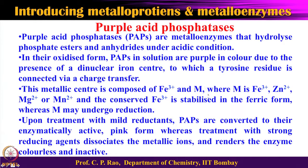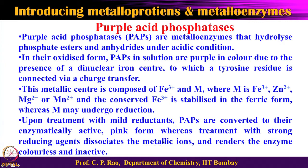When you take this purple acid phosphatase and treat it with a mild reducing agent, it converts to the active form. However, if you use a strong reducing agent, the dinuclear centers dissociate, the enzyme becomes inactive, and the solution becomes colorless — meaning they are totally broken down.